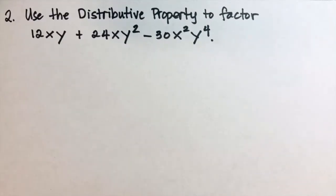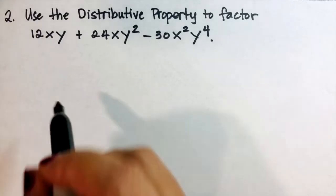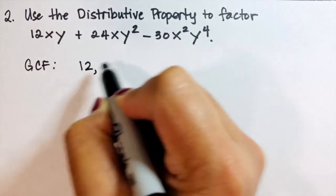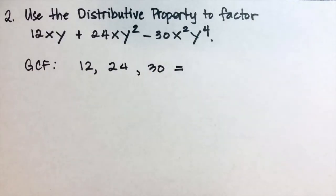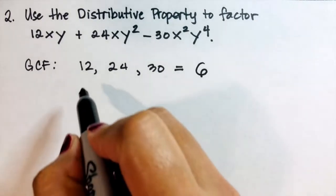Example number two: use the distributive property to factor 12xy plus 24xy squared minus 30x squared y to the fourth. Step one is to find the GCF. For the coefficients 12, 24, and 30, the GCF is 6.